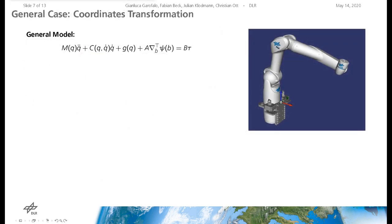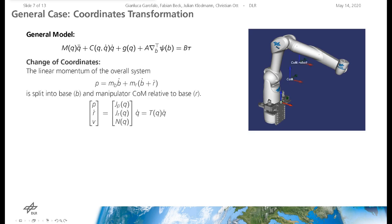The strategy for the simplified case can be generalized to an n degrees of freedom manipulator mounted on a three degrees of freedom translationally flexible base. A change of coordinates is applied to the Lagrange equations of motion. The linear momentum of the overall system P can be split into contributions of the base and the manipulator center of mass relative to the base, denoted by R. The momentum P and the manipulator center of mass R are used to define the coordinate transformation. Furthermore, n minus 3 null space velocities are selected using a dynamically consistent null space projector.